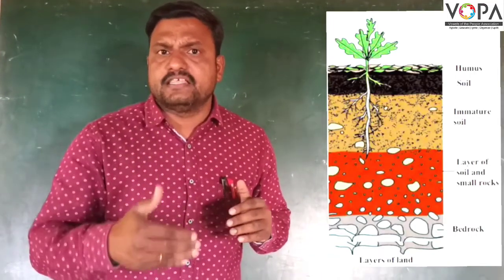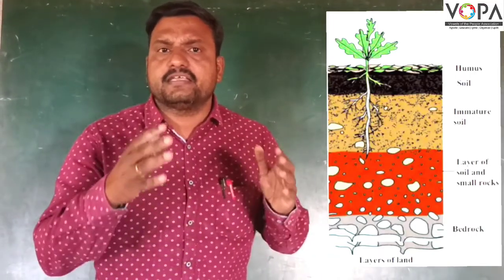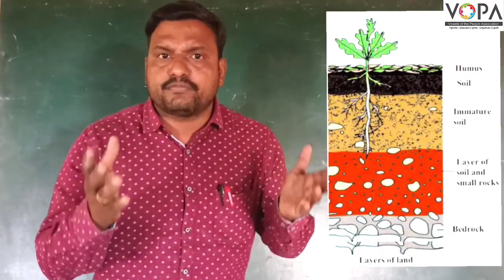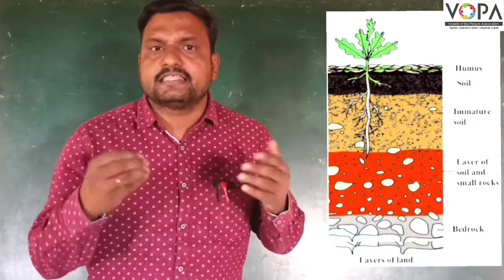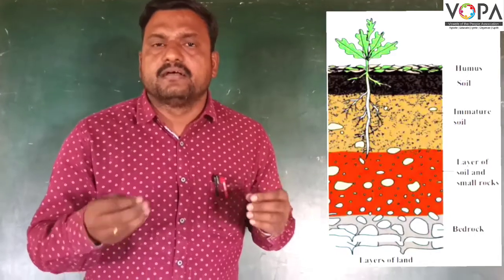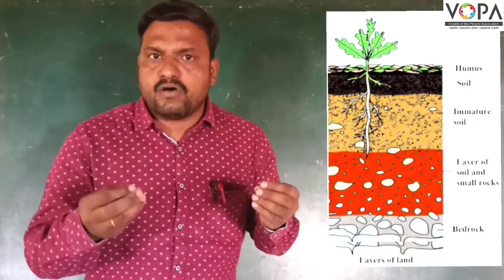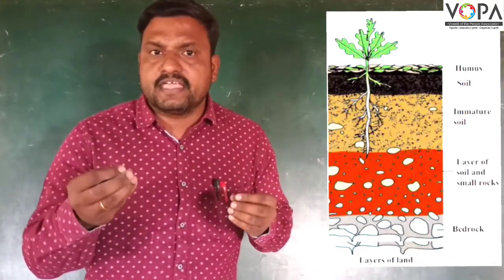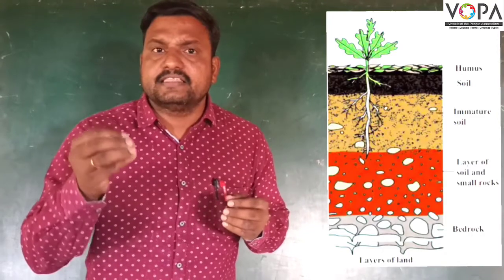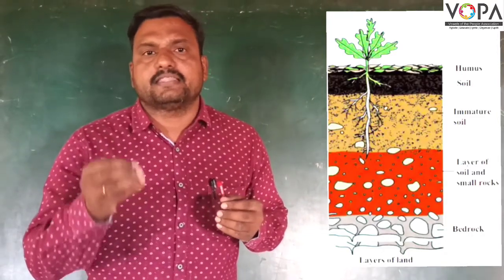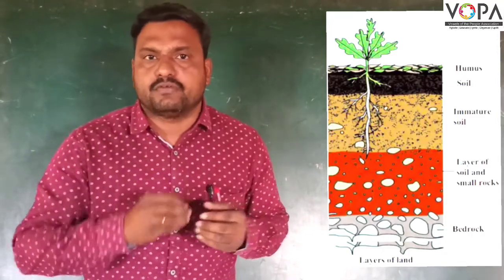Below this layer, there is a pool of soil, sand, worms, small rocks, and insects. This layer is called immature.